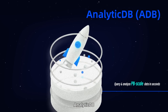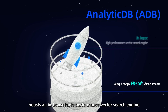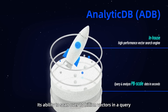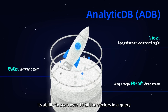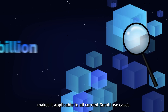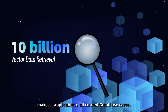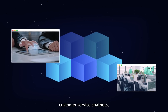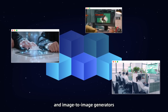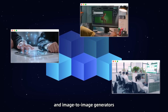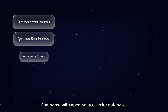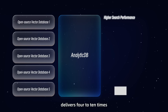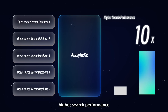In addition, AnalyticDB boasts an in-house high-performance vector search engine. Its ability to scan over 10 billion vectors in a query makes it applicable to all current generative AI use cases, such as RAG-capable applications, customer service chatbots, and image-to-image generators. Compared with open-source vector databases, AnalyticDB delivers 4 to 10 times higher search performance.